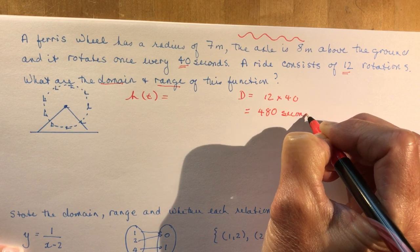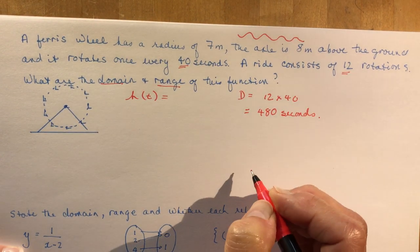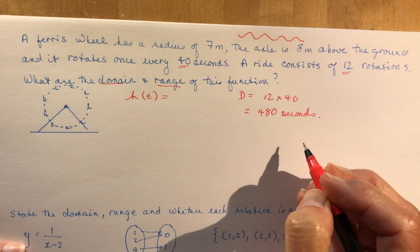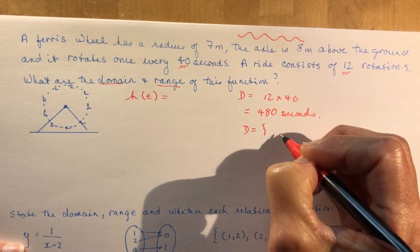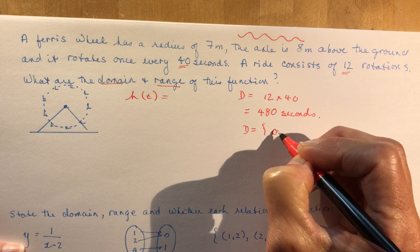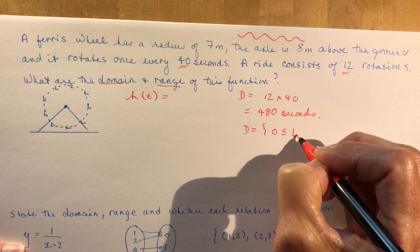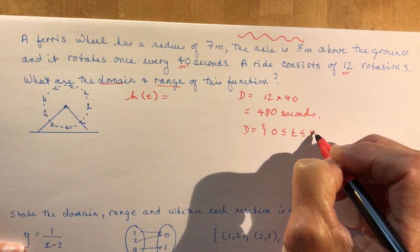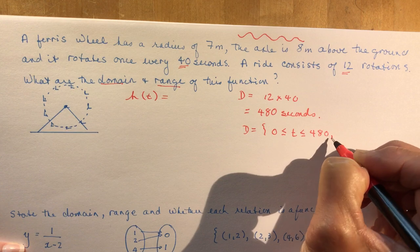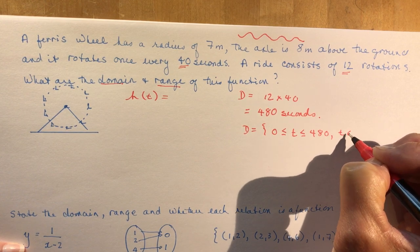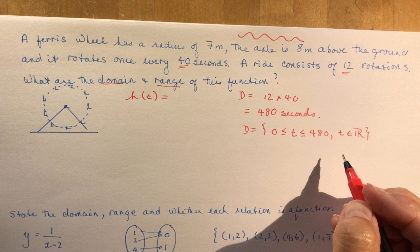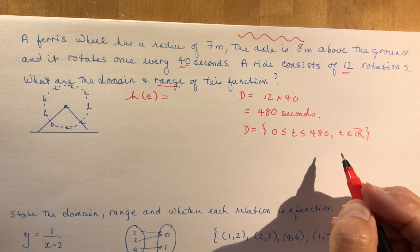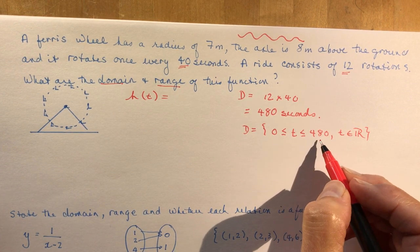So if they do 12 rotations, it's going to be 12 times 40, so 480 seconds. That's my domain. Because if you start it off, you're actually going from zero. The ride starts at time zero and it goes up to time 480. And t is going to be an element of real numbers because there are fractions of seconds. You don't stop time. So between zero and 480.